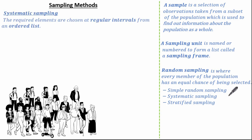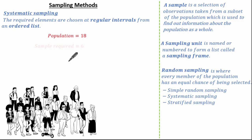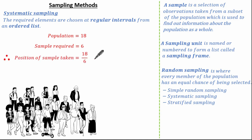Moving on, let's look at systematic sampling. Systematic sampling means the required elements or items are chosen at regular intervals from an ordered list. In this population we have 18 people and I want a sample of 6, so I divide 18 by 6, meaning every third person will be selected.